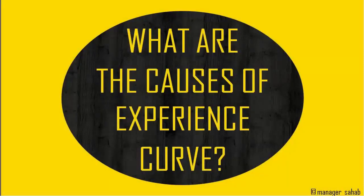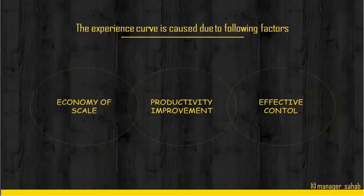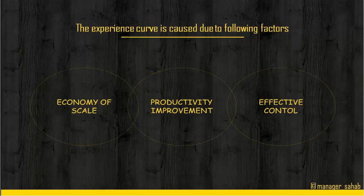Now we'll see what are the causes of the experience curve. Productivity improvement of labor due to accumulated experience, skills, devising of new tools and fixtures, developing reflex actions, etc. This also reduces supervisory and quality control work. The increased volume of production leads to more specialization and thus saves time.